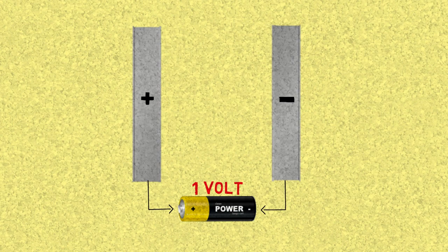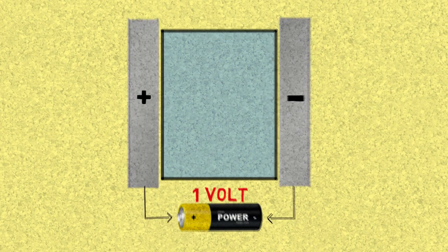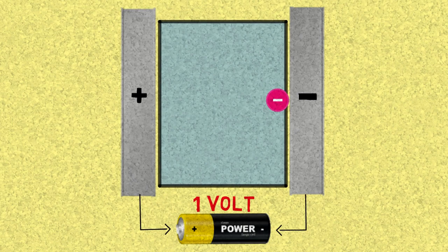Between the plates there is an electric field of one volt. If we now put one single electron on the negative side of the plate, it's going to move and attract to the positive side because of the electric field.